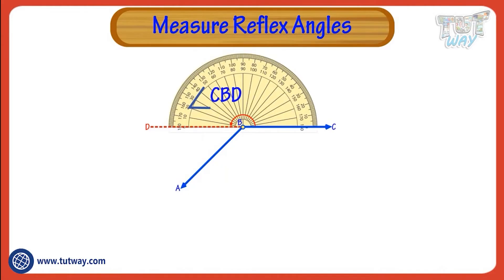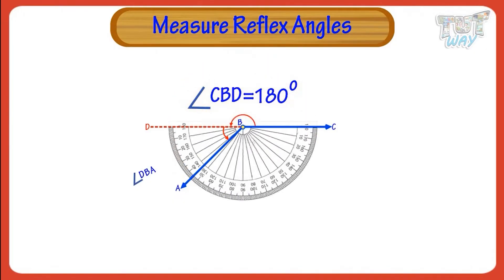We know a straight angle measures 180 degrees, so we will measure the size of angle DBA. Place the protractor upside down so that the center of the protractor is directly over the angle's vertex, that is B.